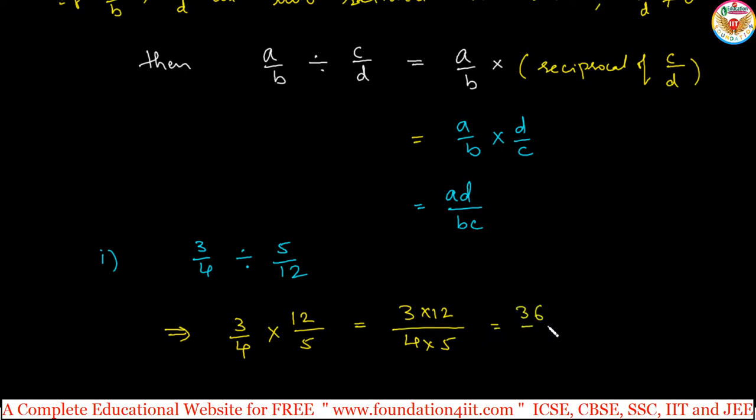3, 12, 36. 4 into 5, 20. We can write it in standard form, make it in the simplest form. This is 10, 18, 2 table, again 2, so 10, 2, 9. So 9 divided by 5 is the answer of 3 by 4 divided by 5 by 12.